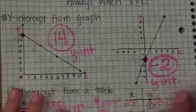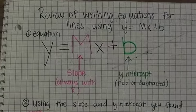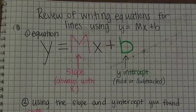And that is your review of writing equations for lines using y equals mx plus b. Take the b value and add it at the end — or subtract if it's negative — take your slope and place it with x.